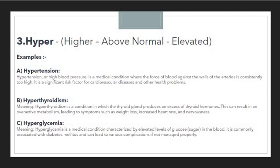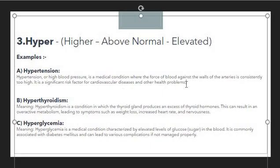The next prefix is 'hyper,' which indicates higher, above normal, or elevated. The most commonly used example is hypertension. Hypertension, or high blood pressure, is a medical condition where the force of blood against the walls of the arteries is consistently too high. If you are indicating something too high, you use the prefix hyper. It is a significant risk factor for cardiovascular disease and other health problems.